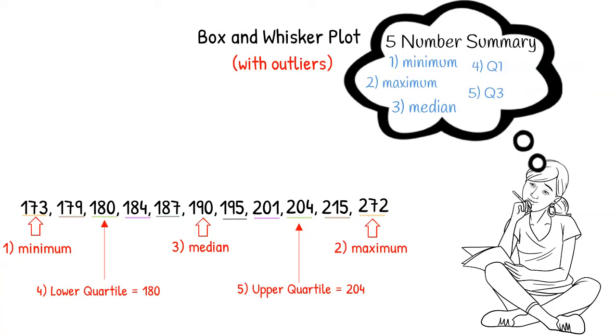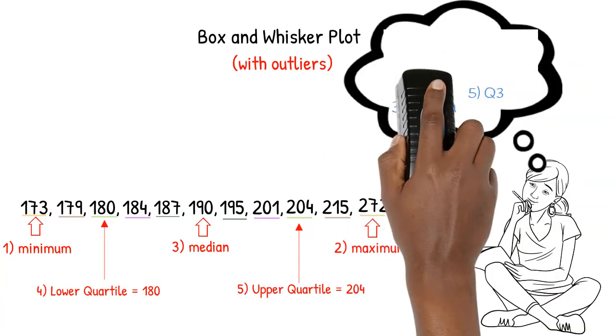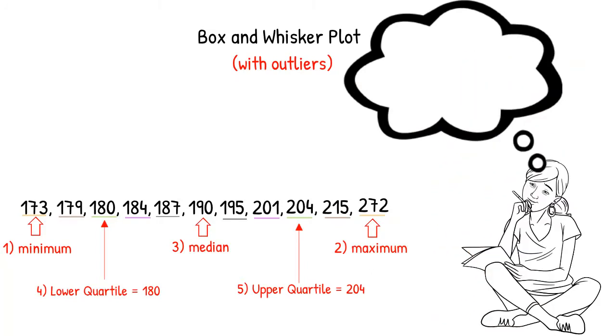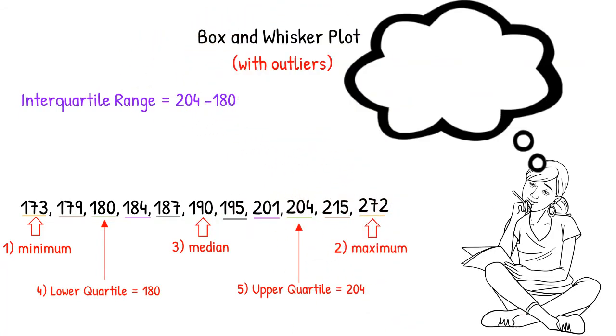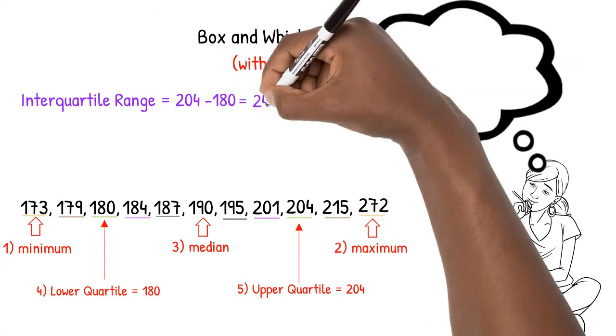Looking at our numbers, 272 pounds seems much larger than the other weights, so we should definitely check to see if there's an outlier. To do this, we'll need to find the interquartile range first. Interquartile range is equal to the upper quartile minus the lower quartile. 204 minus 180 is equal to 24.